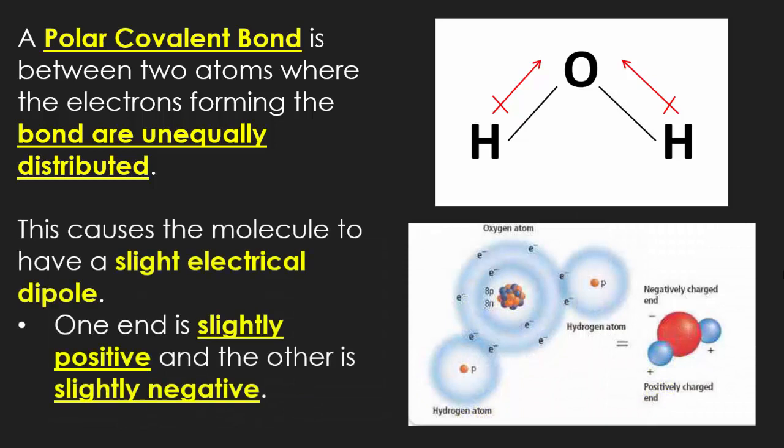When we have a polar covalent bond, this is going to be where we have what we call that dipole moment. Because of the fact that one of the two in a bond is going to be unequally distributed.